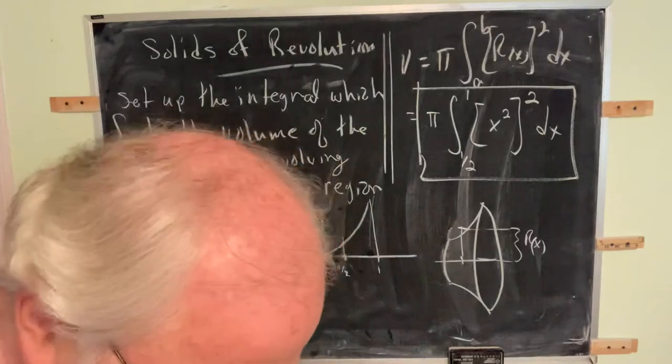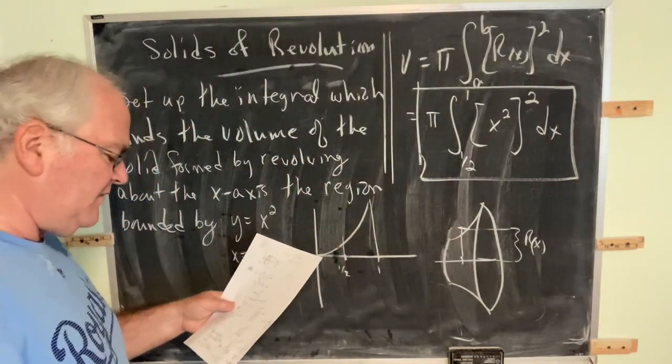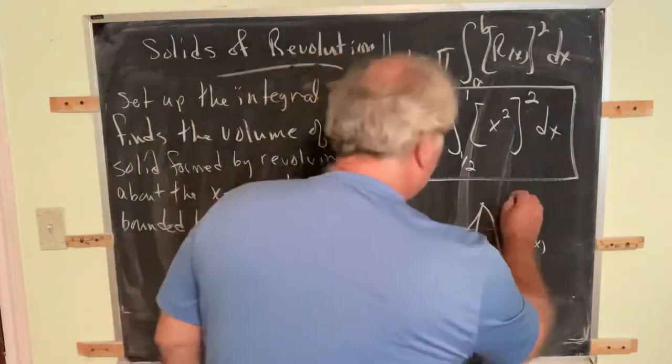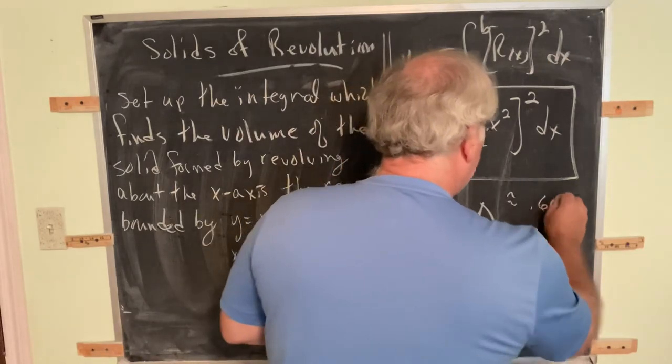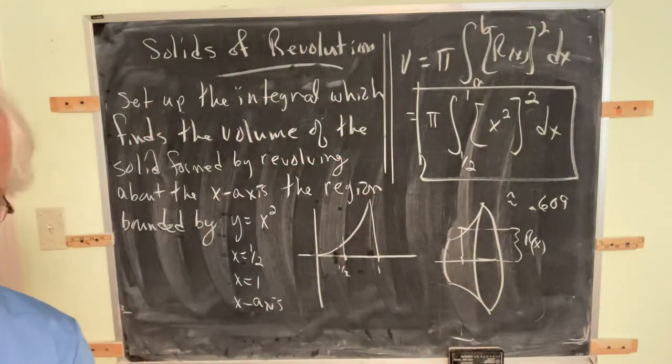I worked it out, it's some god-awful number. If I did this correctly, it's something like 155 pi over 800. I believe this works out to be approximately 0.609, and the units are in whatever units this is measured in.